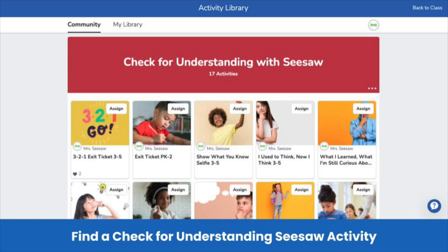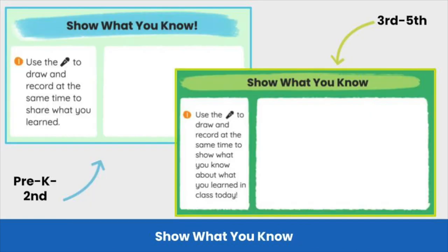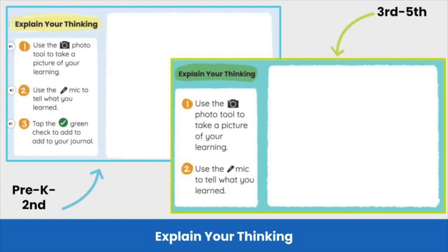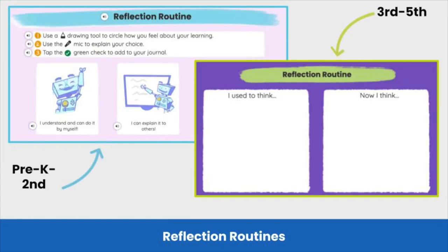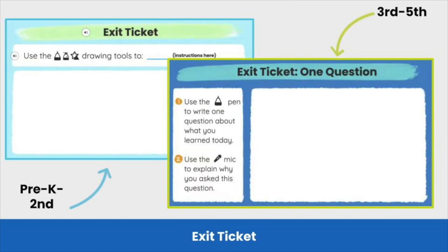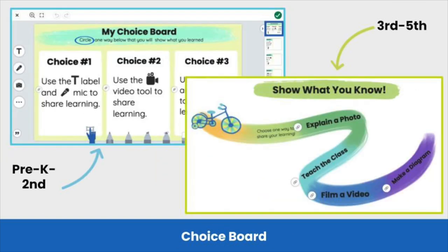Here is the curated check-for-understanding collection of activities. In this collection, you will find Show What You Know, Explain Your Thinking, Reflection Routine, Exit Ticket, and Choice Board Activities for both Pre-K through 2nd grade and 3rd through 5th grade.